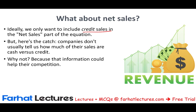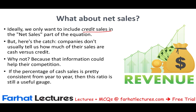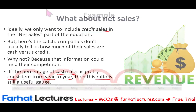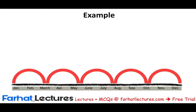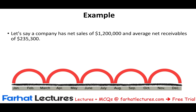Management, when they compute this ratio, knows exactly what their credit sales are. Keep in mind, if the percentage of cash sales is consistent from year to year, then this ratio is useful. If cash is always 20% of sales, then the ratio makes sense because you can compare it over periods — 80% of sales is always credit. If it's not consistent, the ratio will not make sense for outsiders.